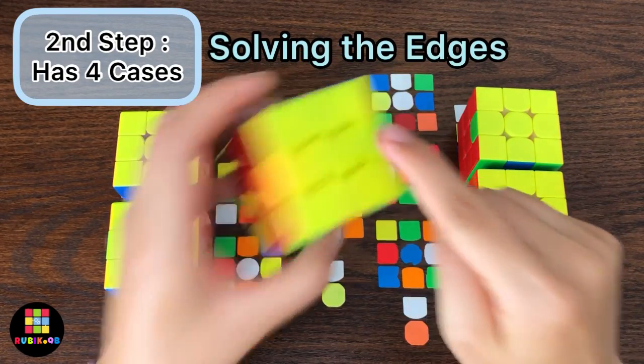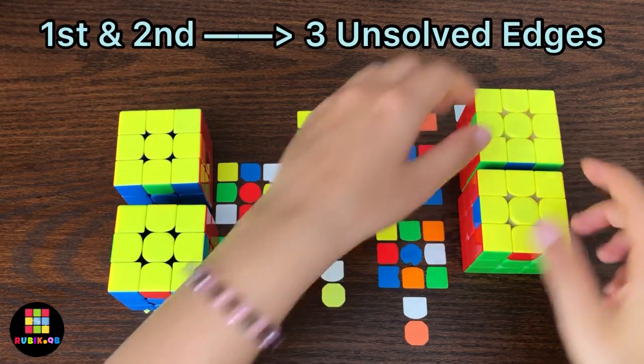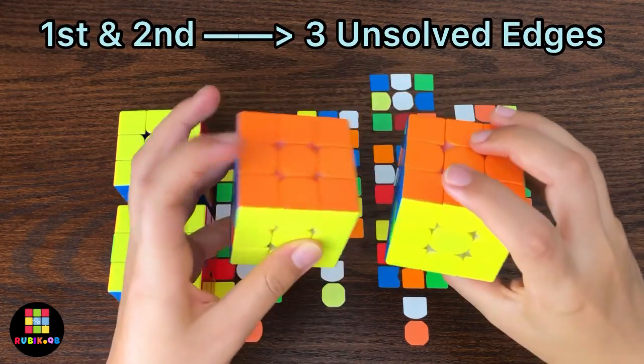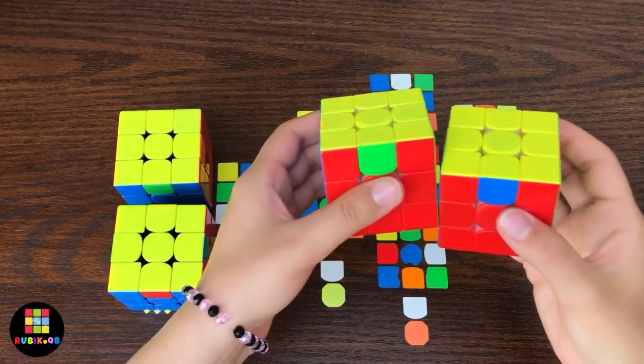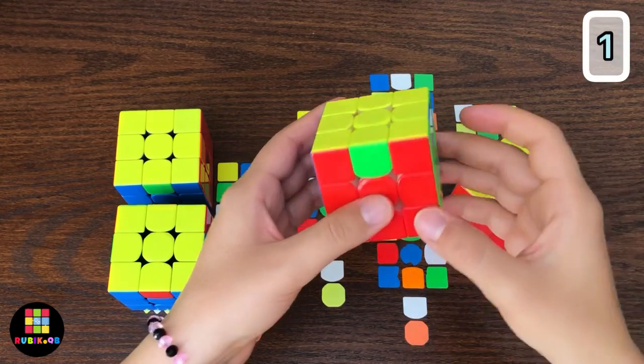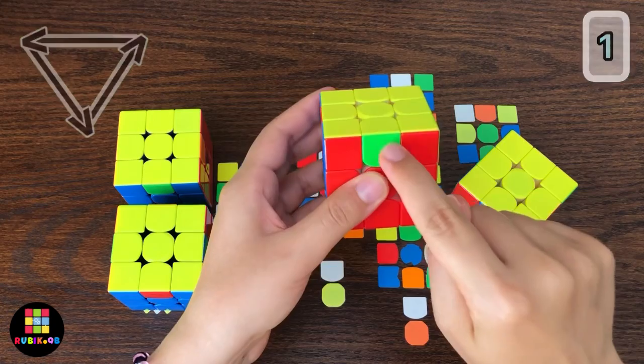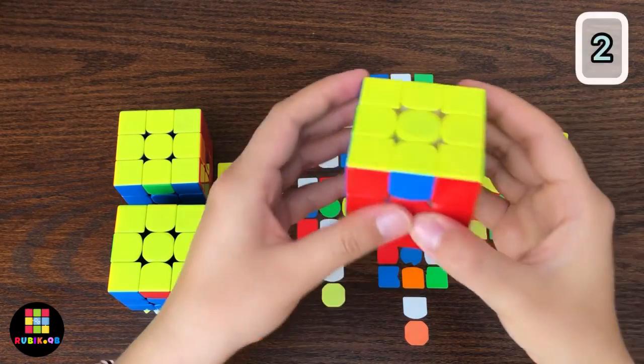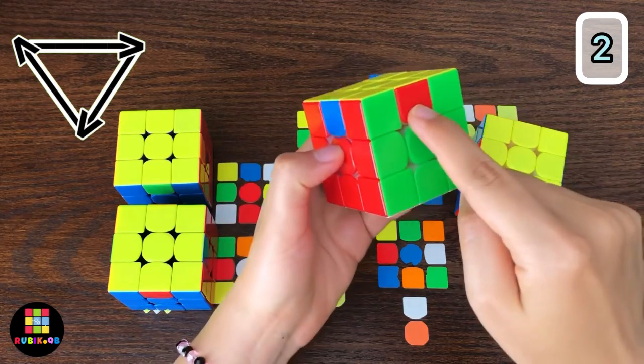After solving all the four corners, you need to solve the edges. Here we have four different cases. For the first and second one, this edge or totally this face is already solved. So for the first one, this edge goes here, this one goes there and this one goes here. But for the second one, this edge goes here, this one goes there and this one goes here.